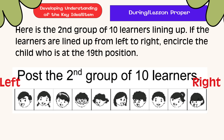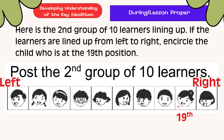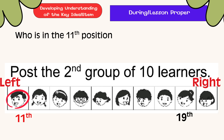Here is the second group of ten learners lining up for the bus. If the learners are lined up from left to right, circle the child who is at the ninth position. That's right — the learner at the ninth position is near the right side. Here are their positions. Here is the child in the eleventh position.